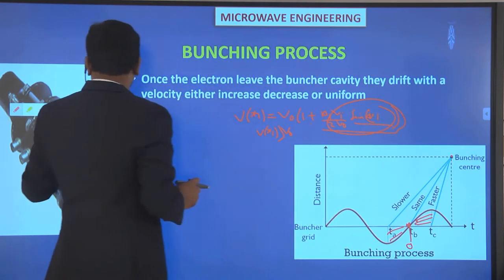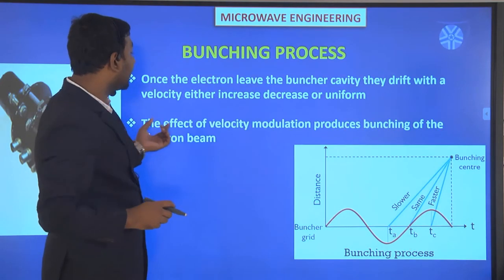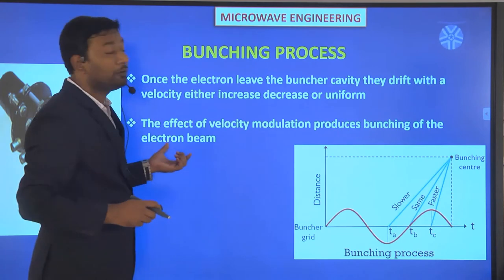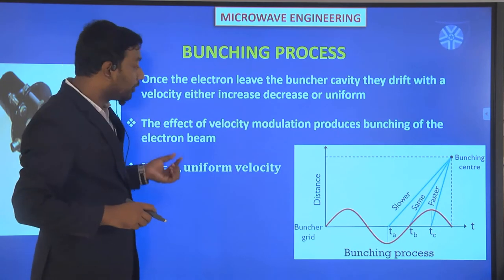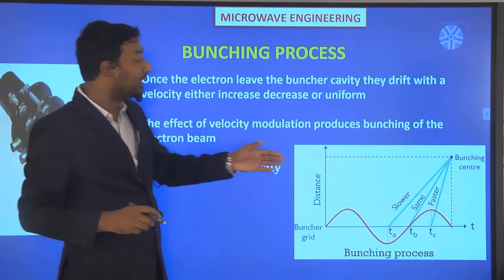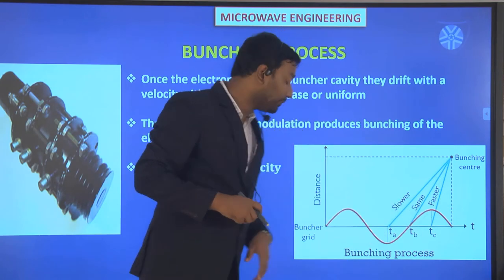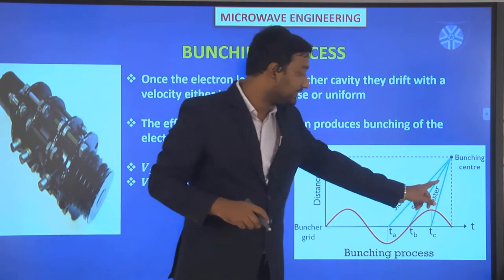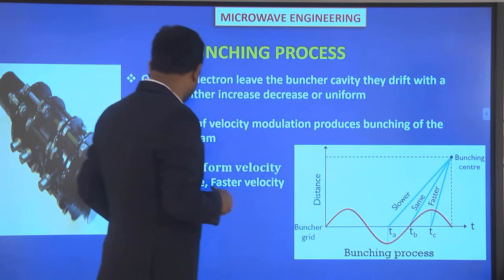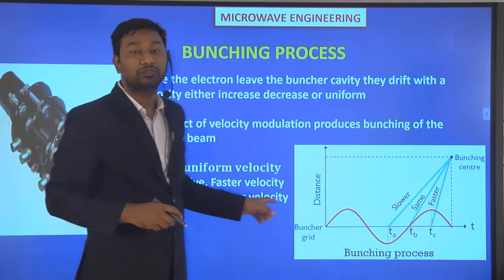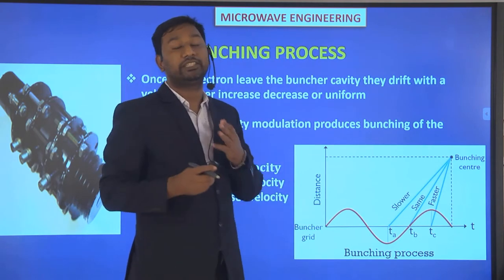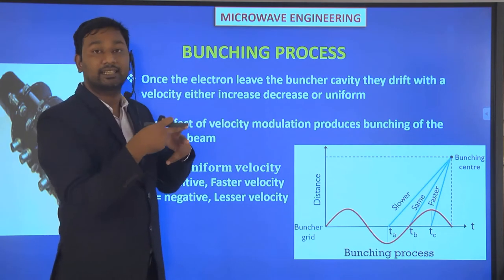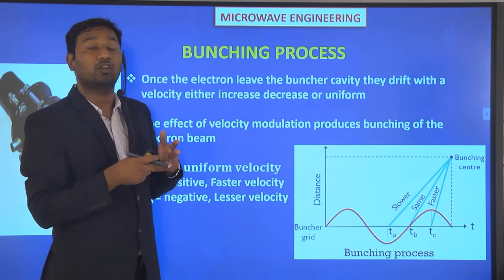The effect of velocity modulation produces bunching of the electrons. Whenever Vs equals zero, the electron moves with the same velocity. Whenever Vs is positive, the electron moves with a faster velocity. And whenever Vs is negative, the electron moves with lesser velocity. So three conditions exist: same, faster, and lesser velocity.